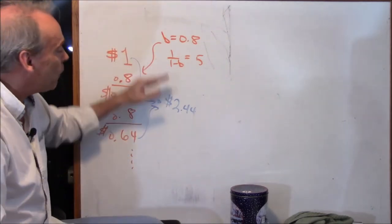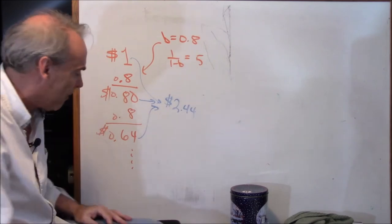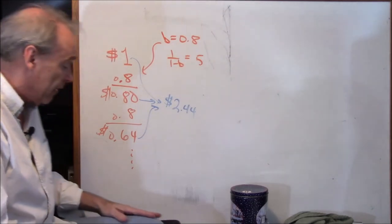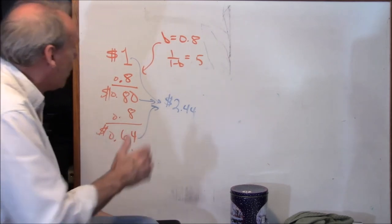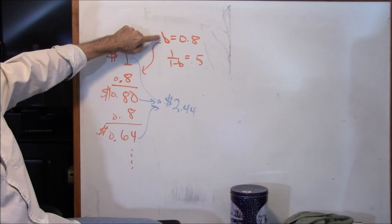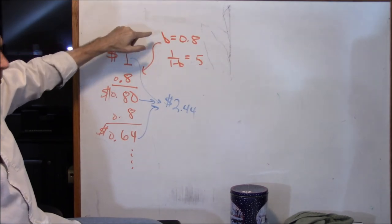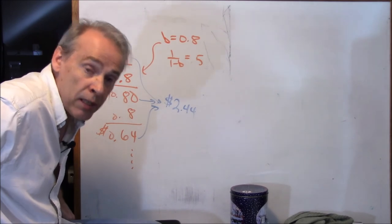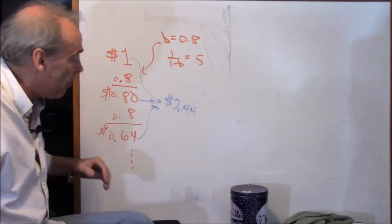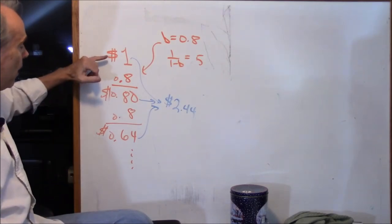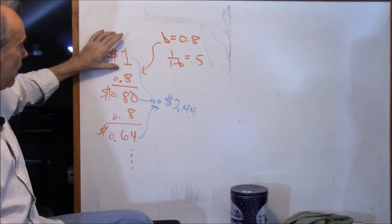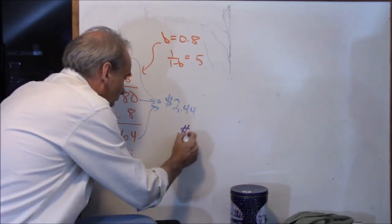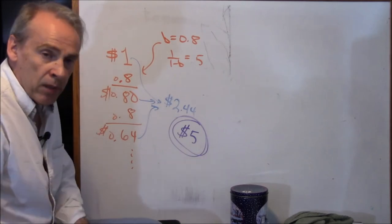This is how the multiplier process works and how it's connected to this propensity to consume. It's called the marginal propensity to consume — remember the marginal analysis from neoclassical economics? Keynes was a neoclassical economist at one point, so he used that marginal analysis. What's happening is the multiplier process causes the initial increase in investment to be multiplied out to eventually be a much larger number in the macro economy. That's how the multiplier process works.